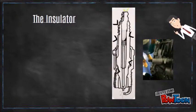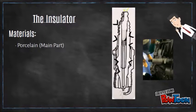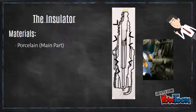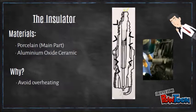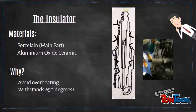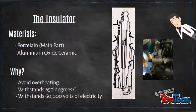The main part of the insulator is made of porcelain, with the tips enclosed in the combustion chamber made from aluminum oxide ceramic. Why? To avoid overheating, it must offer good thermal conductivity. The aluminum oxide ceramic can withstand 650 degrees Celsius of heat and 60,000 volts of electricity.